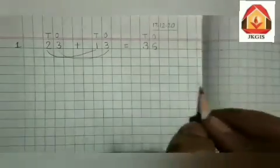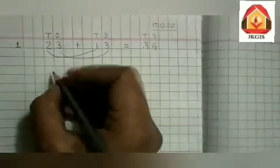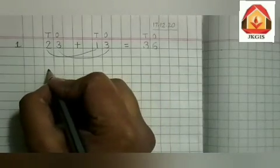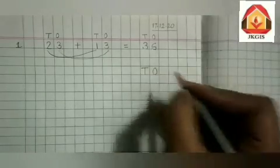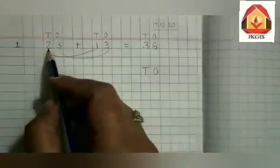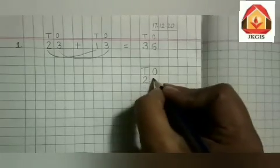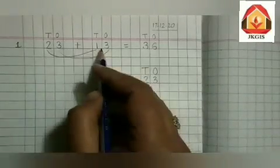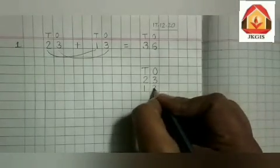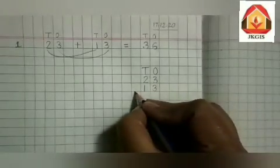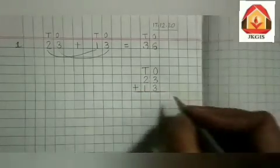We can do this same addition in vertical way. When we do vertical addition, first we always write 10's and 1's above the numbers. After that, we will write the first number — a boy has 23 trucks, so we will write 23. After that, we will write the second number — a girl has 13 trucks, so we will write 13. Then we will make a sleeping line and put the addition symbol on the left side.